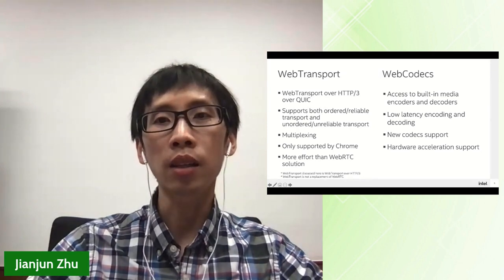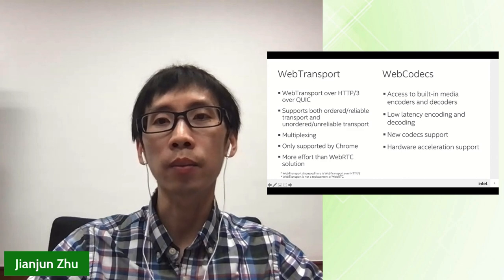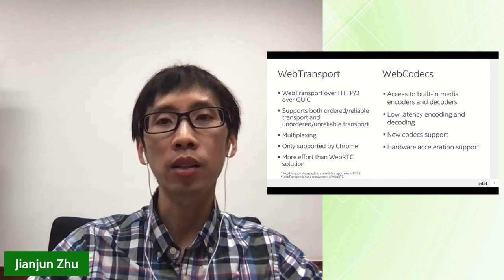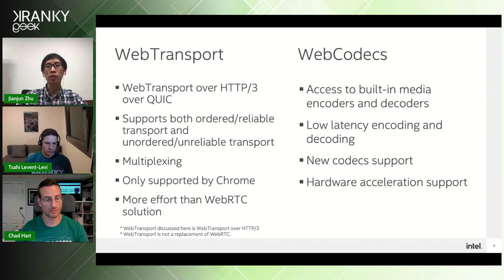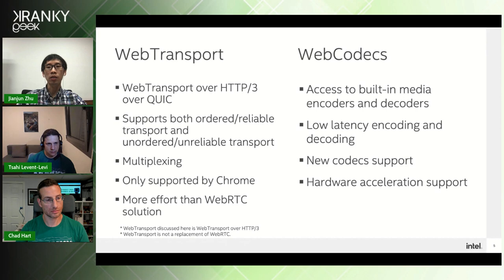WebTransport provides flexible APIs for web applications to communicate with servers. WebTransport over HTTP/3 is based on QUIC, taking advantage of encryption and congestion control. It supports both reliable and unreliable transport, and also supports multiplexing — allowing multiple streams in the same connection without head-of-line blocking. However, it's only supported by Chrome and requires more effort than WebRTC for streaming or conference applications, because WebTransport only provides transport-level APIs.